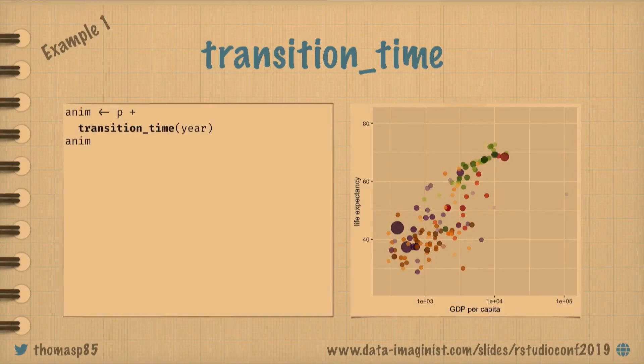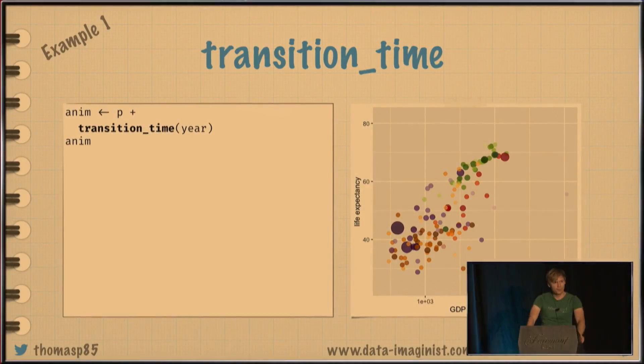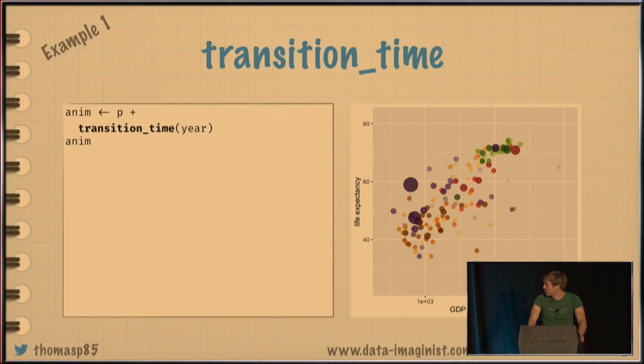So how do we make this move? Well, it's actually quite simple. Here we have, we want to animate it over year, and year is a continuous variable, so we use the transition_time function. And we give it year and say, well, do something with this. And what we get is, wait, it's moving.